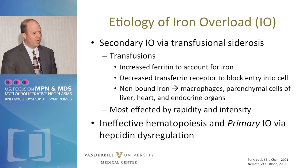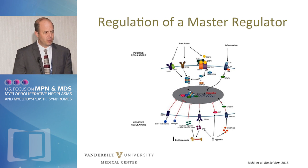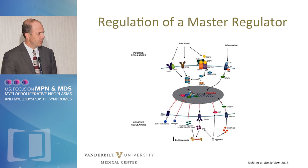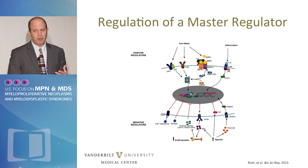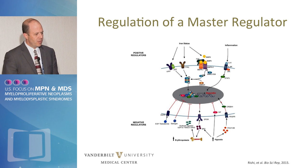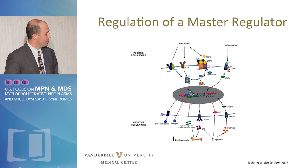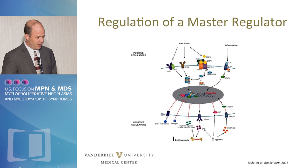There's also a primary iron overload via hepcidin dysregulation that occurs in the setting of ineffective hematopoiesis. Hepcidin is the master regulator of iron metabolism and typically is dominantly positively regulated through the bone morphogenic protein SMAD4 pathway. In most anemias, hepcidin is actually low. In the setting of iron overload and chronic disease and inflammatory states, the IL-6 driven JAK-STAT pathway is the dominant positive regulator and hepcidin levels go high.